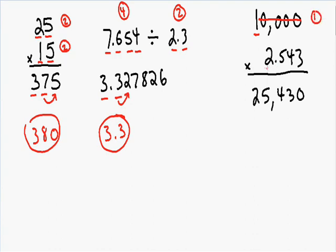So we have one significant figure in the number 10,000, and 2.543 has four significant figures. Our final answer has to have the same amount of significant figures as the smaller number. Since 10,000 has one significant figure, then our final answer also has to have one significant figure. So we can use the number 2, and our second digit we can use to round. Since our second digit is a 5, we round up, the 2 becomes a 3, and we have a final answer of 30,000.